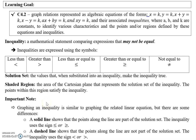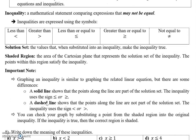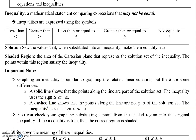Here is an important note. Graphing an inequality is similar to graphing the related linear equation, but there are some differences. We will have two types of lines. The first is a solid line, which shows the points along the line are part of the solution set, and is used with the inequality signs less than or equal to, or greater than or equal to.